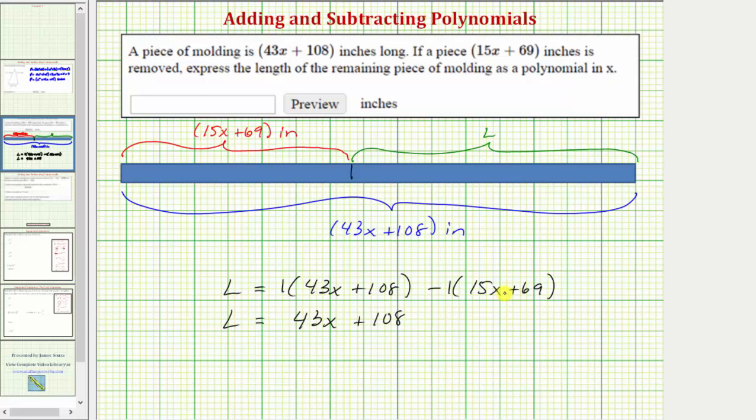And distributing negative one is going to change the sign of both terms inside the parentheses. And therefore we have minus 15x minus 69. Notice how here we are subtracting both terms inside the parentheses.